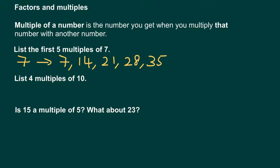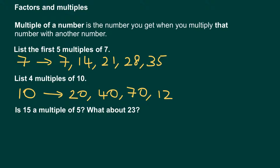Question two asks: list four multiples of ten. Now these can be any multiples — they haven't asked us to do this in order. So, ten times two is twenty — that's one multiple. Ten times four is forty — that's another multiple. Ten times seven is seventy, which is another multiple. And then ten times twelve, which gives us one hundred and twenty.